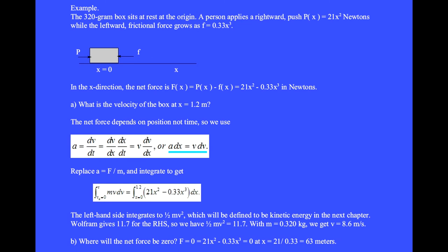Replacing the acceleration a equals force over mass and integrating we get the integral from v0 equals 0 to final velocity v of mv dv equals the integral over x from 0 to 1.2 of 21x squared minus 0.33x cubed dx.